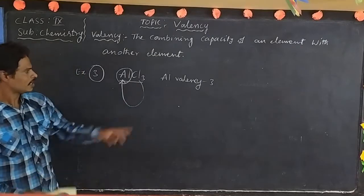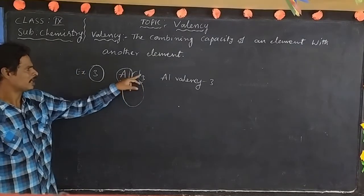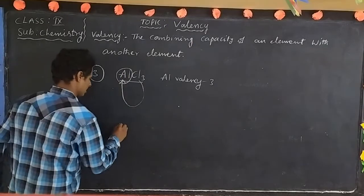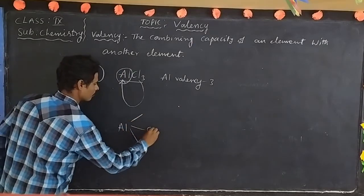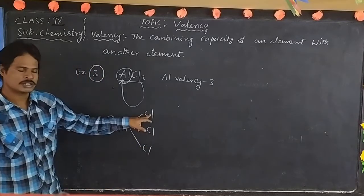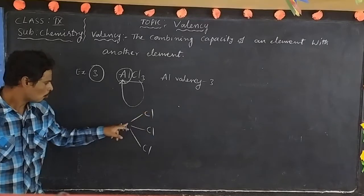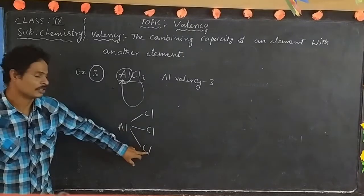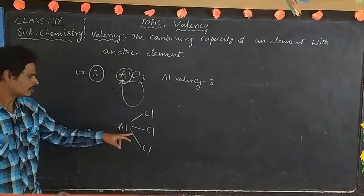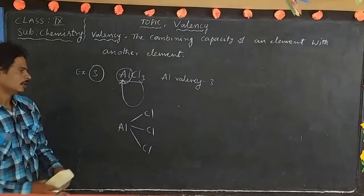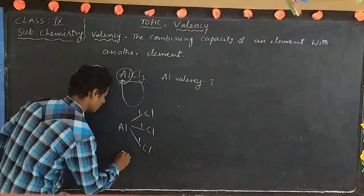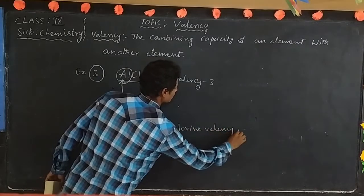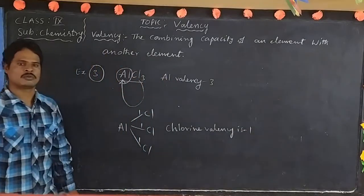What is the valency of chlorine? The combining capacity — how many aluminums are attached to each chlorine atom? One aluminium is attached to each chlorine atom. Since one aluminium attaches to each chlorine, each chlorine gets one valency. So chlorine valency is one.